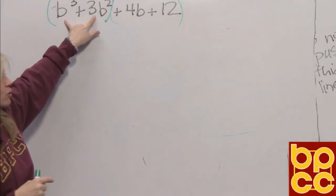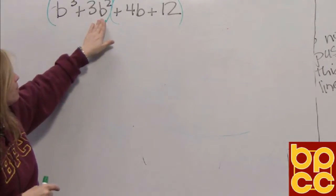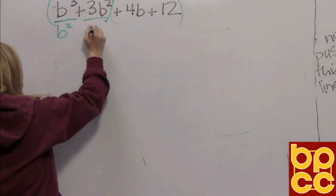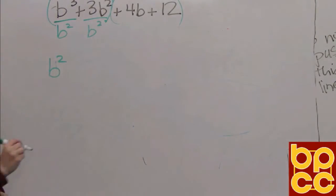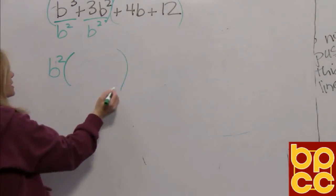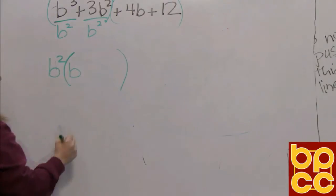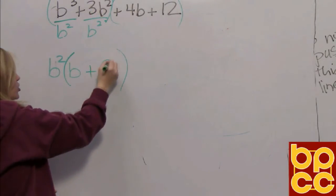We're going to look at these first two terms and say, B cubed plus 3B squared have a B squared in common. So we're going to take out the B squared. That's our GCF. And we're going to tell me what's left. B cubed divided by B squared is B. 3B squared divided by B squared is just a 3.